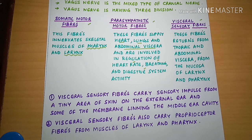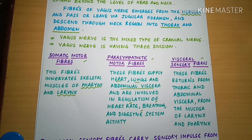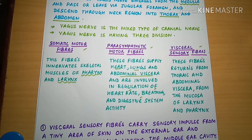The Visceral Sensory Fibres also carry proprioceptive fibres from the muscles of larynx and pharynx. In summary, the Vagus Nerve has three divisions: Somatic Motor Fibre Division innervates muscles of pharynx and larynx; Parasympathetic Motor Fibre Division innervates the heart, lungs, and abdominal viscera regulating heart rate, breathing, and digestion; and the Visceral Sensory Fibre Division carries sensory and proprioceptive information from thoracic and abdominal viscera and mucosa of larynx and pharynx.